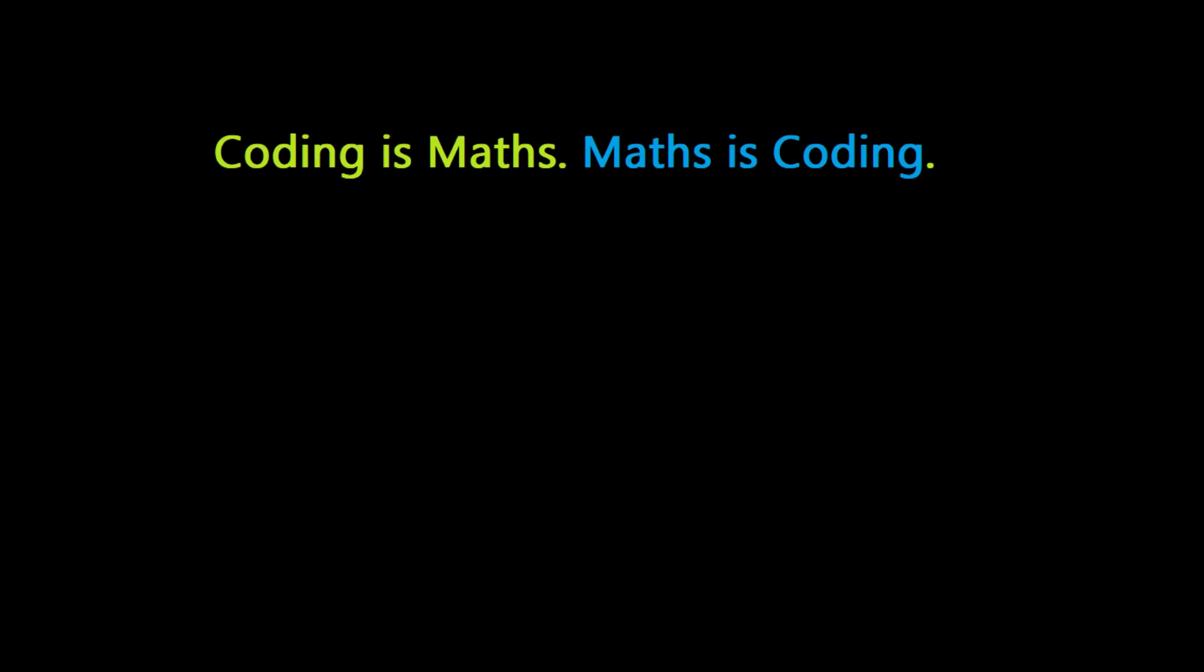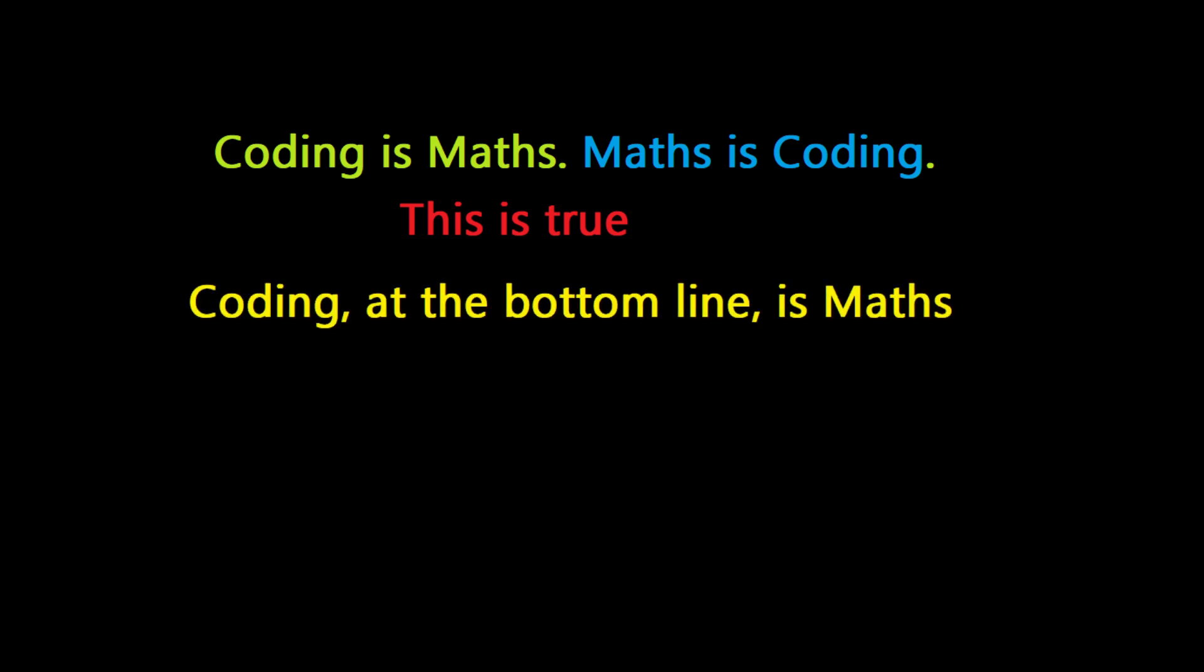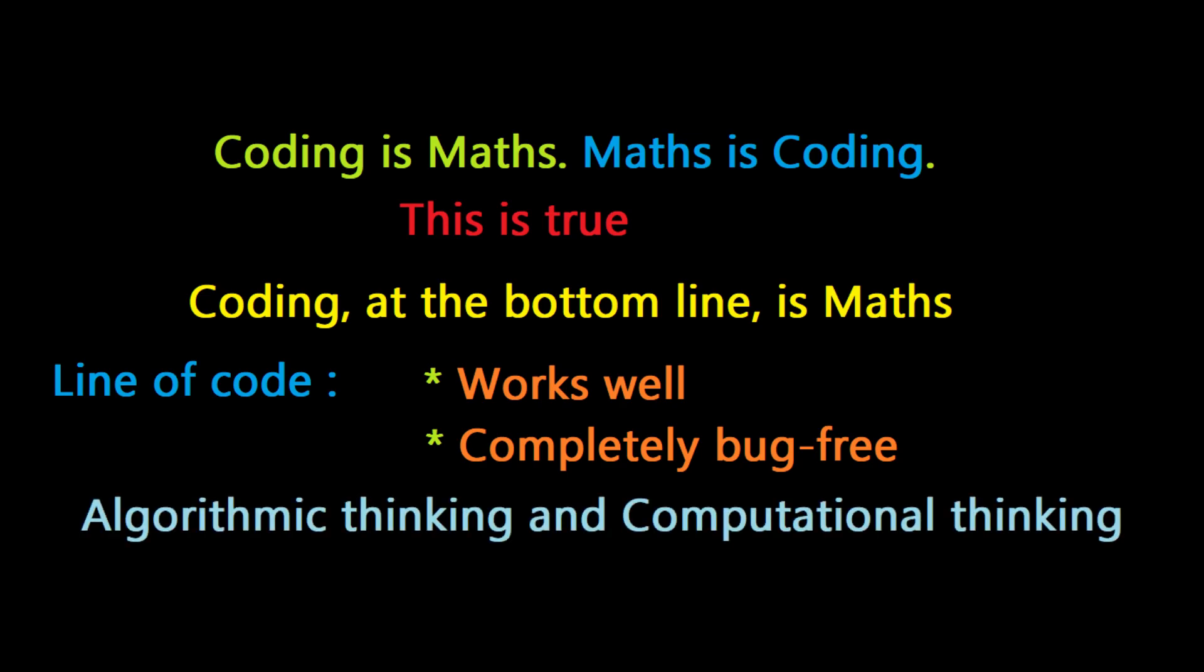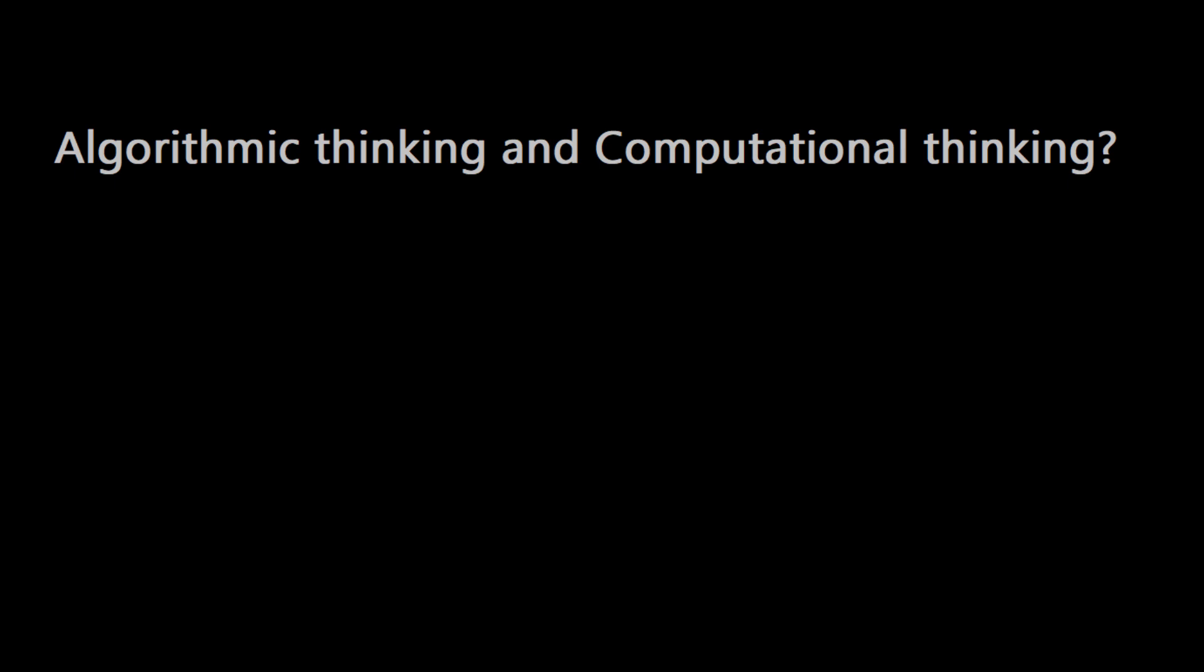Coding is maths or maths is coding. This is true. Coding at the bottom line is maths. In order to write a line of code that works well and that is completely bug free, coders need to strengthen their algorithmic thinking and computational thinking. And what are these two ways of thinking in their deepest essence? These are maths.